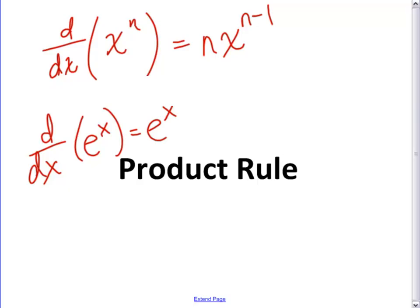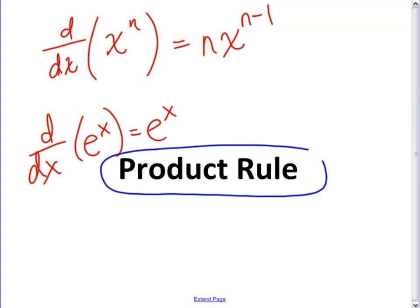So what we want to do today is ask: what if we combine functions in different ways? For example, what if you have two functions that you know how to take the derivative of, and they're being multiplied — a product of two things. For example, what if you wanted to take the derivative of x times e to the x?